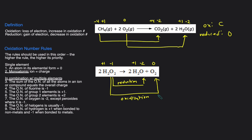That's how you would determine which element is oxidized and reduced. Start by assigning the oxidation numbers, then look for the element that has an increase in oxidation number going from left to right — that's the element that gets oxidized. The element that has a decrease in oxidation number going from the left-hand side to the right-hand side is the one that is reduced.